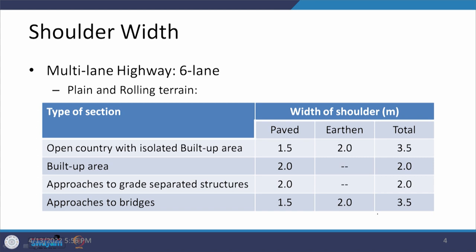The leftover portion of shoulder width was related to multi-lane highways, specifically 6-lane highways. In the case of 6-lane highways under plain and rolling terrain, the conditions for categorization remain the same. There are four categories: open country, built-up area, approaches to grade separated structures, and approaches to bridges. The latter three are more constrained in nature compared to open country where land is available on the sides. The shoulder width is described in terms of paved or earthen, a combination, or only paved under extreme restricted conditions of land availability.